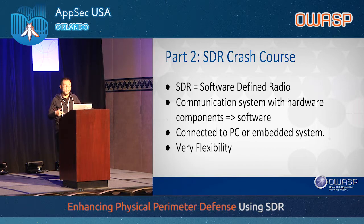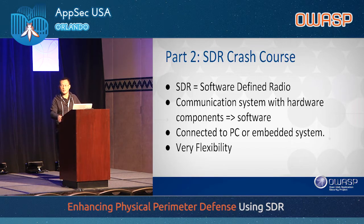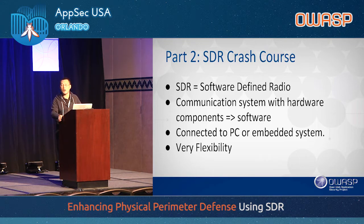SDR means software-defined radio. It's a communication system with hardware components defined in software, so it's really flexible and programmable — something connected to a PC or embedded system. You can operate a software-defined radio using either a Raspberry Pi or your laptop. If you power it with a Raspberry Pi, it's able to connect to an external battery pack, so you can place the whole set of devices anywhere you want.